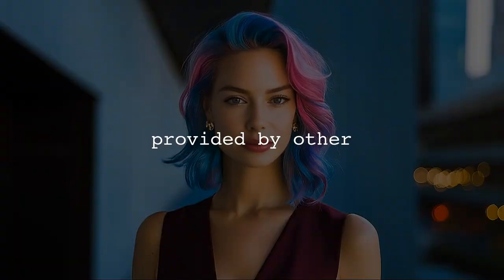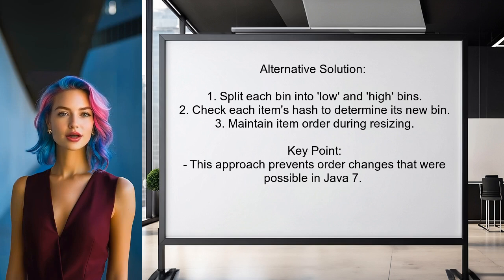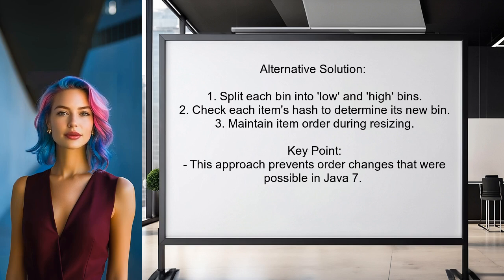Now let's look at the answers provided by other users. One user explains that during a resize, each bin in the HashMap is split into two separate bins. If a bin contains multiple linked items, it's important to check the hash of each item to determine whether it goes into the low or high bin. This is done by examining the new significant bit in the hash. They note that while this process was simpler in Java 7, it was less reliable because it could change the order of items, which is not acceptable in the current implementation.